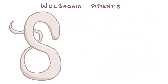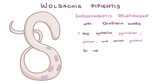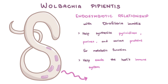Wolbachia pipientis — intracellular bacteria that have a symbiotic relationship with Dirofilaria immitis, meaning they rely on each other to survive. There is evidence to suggest that Wolbachia helps Dirofilaria synthesize purines, pyrimidines, and various proteins for metabolic function. Studies also show that Wolbachia can help Dirofilaria evade attacks by the host's immune system. Wolbachia and Dirofilaria are very dependent on each other, and this is important when we get to treatment.